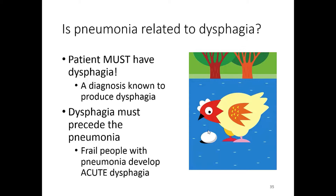Frail people who live at home and develop community-acquired pneumonia can develop an acute dysphagia while they are acutely ill, and that quickly resolves — assuming that they are treated well and recover — and they return to their baseline in a reasonable amount of time.